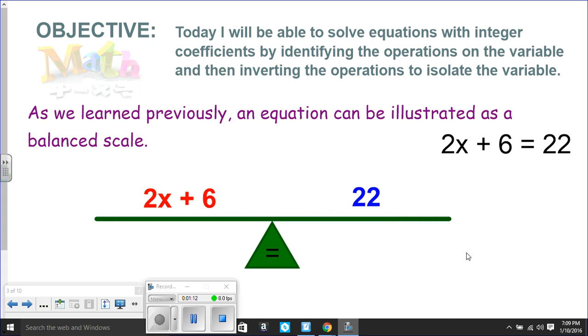Here's an example. 2x plus 6 equals 22. On one side of the equation, we have 2x plus 6. On the other side of the equation, we have 22. So the value of this expression is equal to this value of 22.